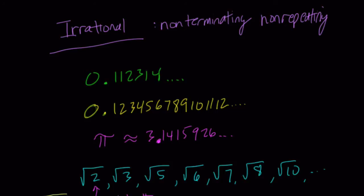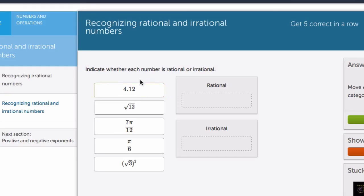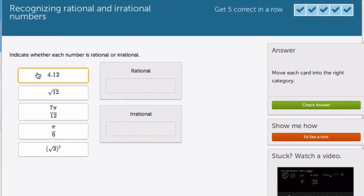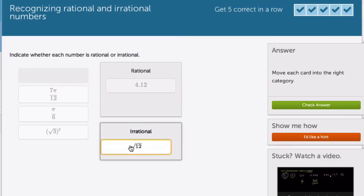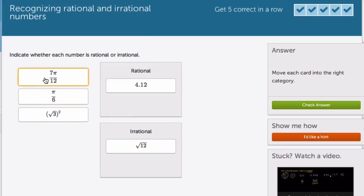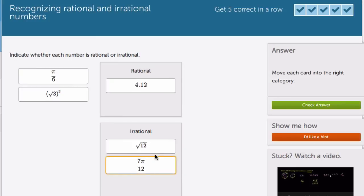So let's look at the module examples. 4.12 is rational—it terminates. √12 is irrational—square root of a non-perfect square. 7π/12 is irrational—multiply by π and divide by 12, you still get an irrational result. In general, when you multiply by an irrational number, you're stuck in the world of irrational numbers.